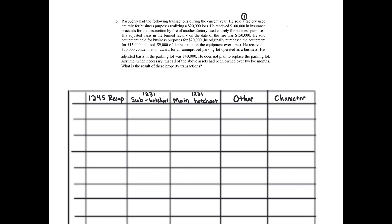The second transaction is he received $100,000 in insurance proceeds for destruction by fire of another factory — that's number two. Number three, he sold equipment. And then four, he received a $50,000 condemnation award for an unimproved parking lot — we'll call that number four. So there are four transactions.